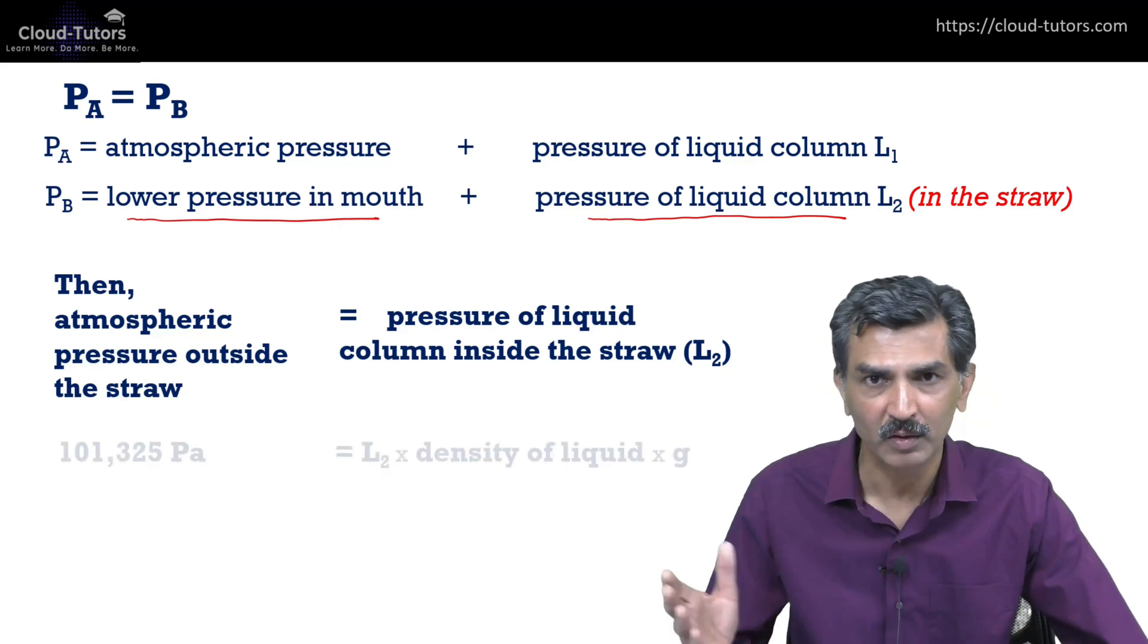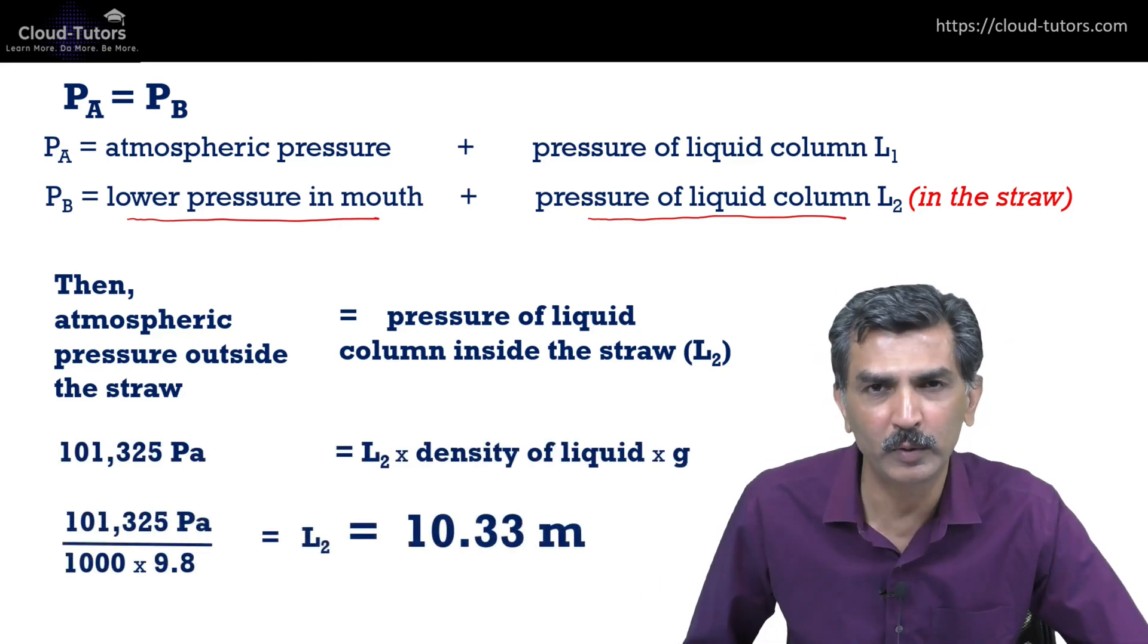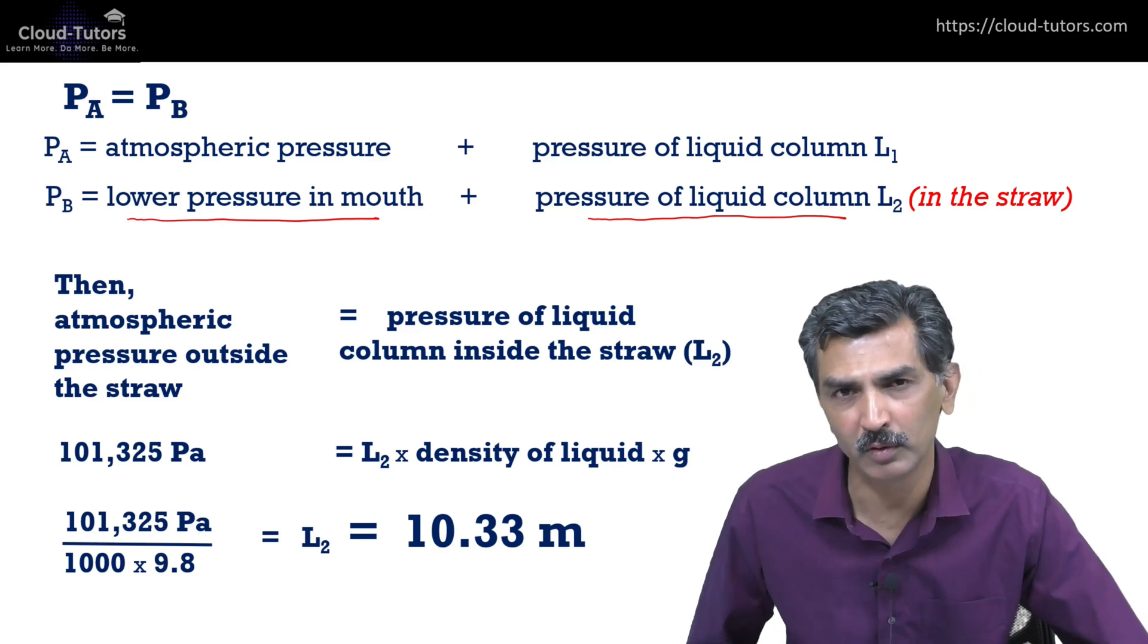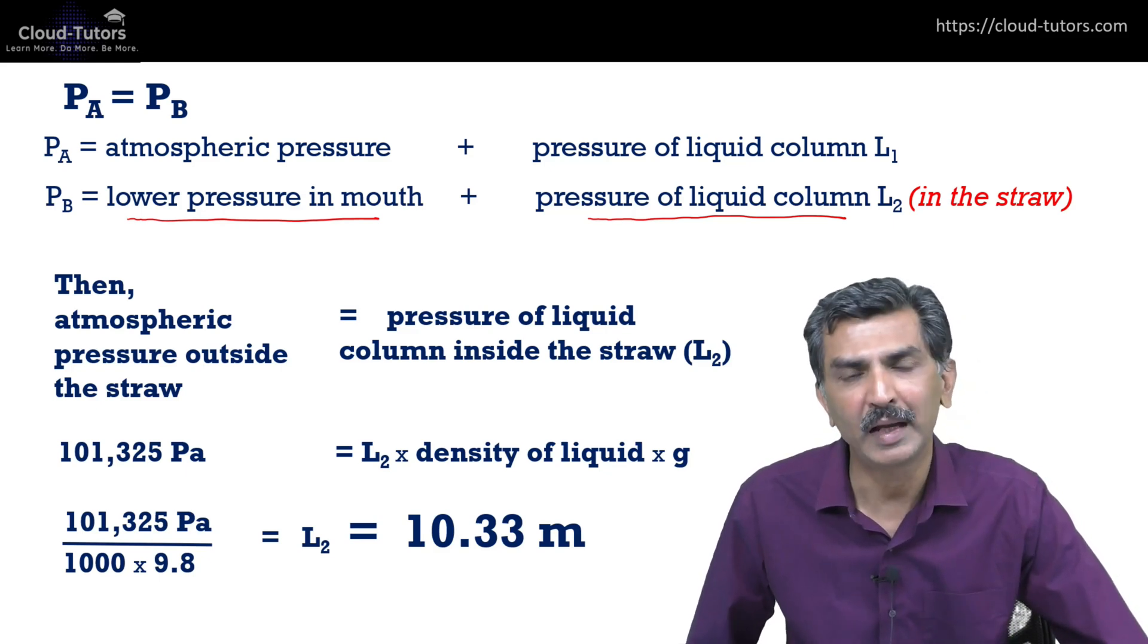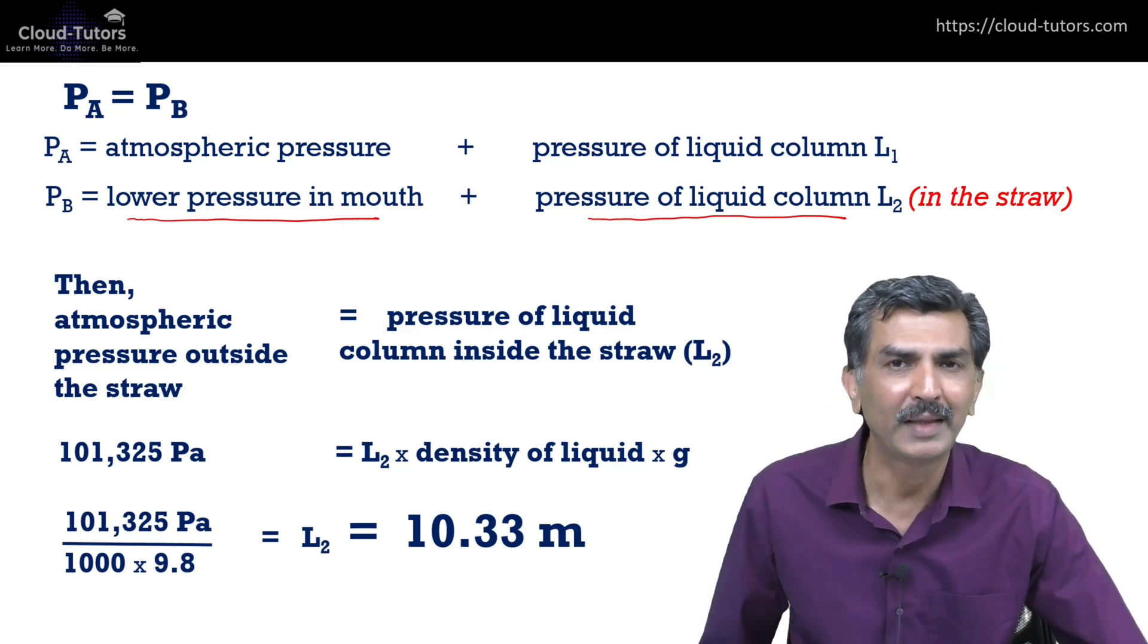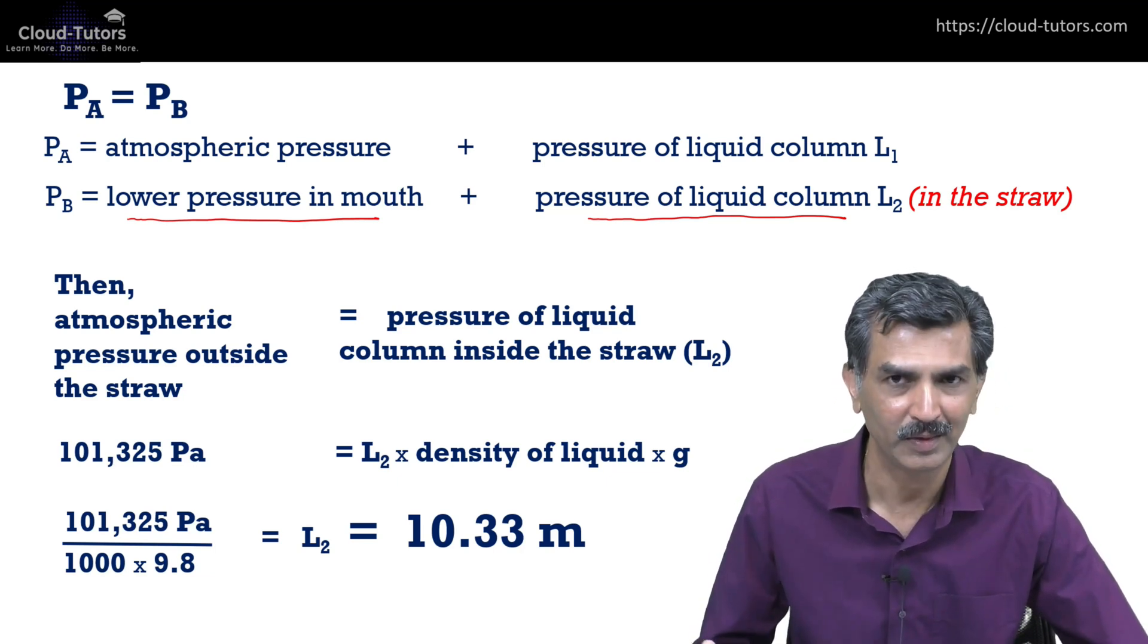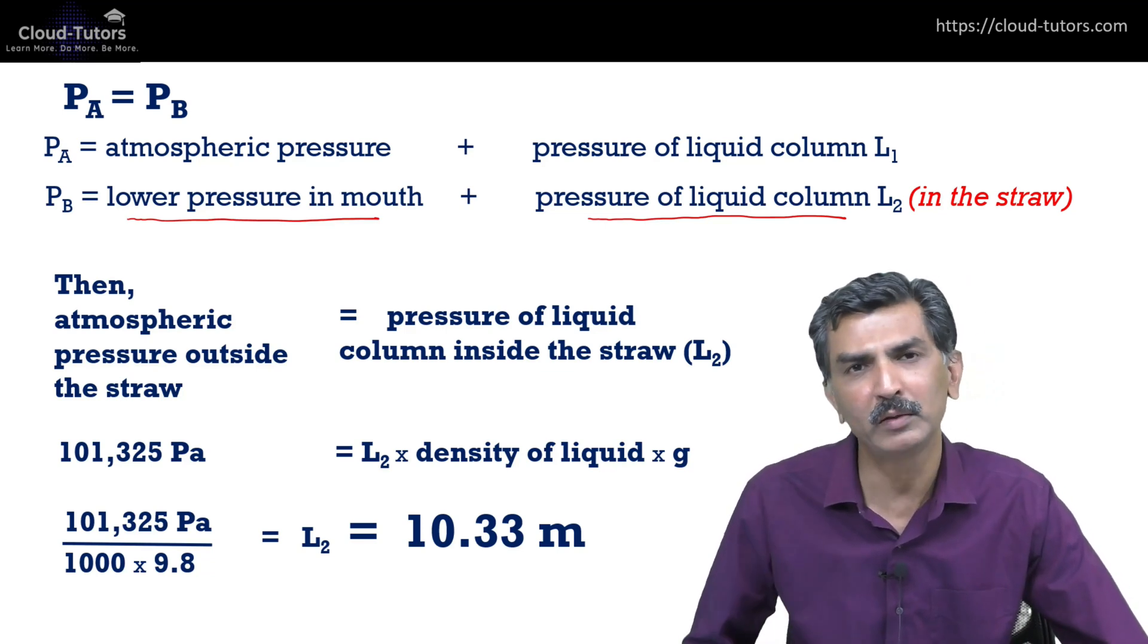So assuming the liquid is water for this calculation, and the atmospheric pressure at sea level is 101,000 pascals, you get that the water in a straw can rise no more than 10.33 meters. It doesn't matter how hard you try; it cannot go above 10.33 meters.